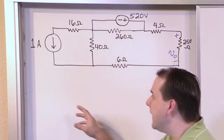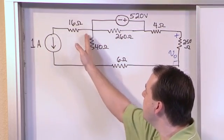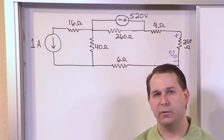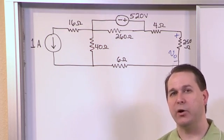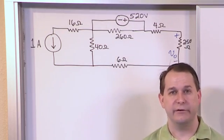What I see right away is that I have a current source here and I have a resistor in parallel with that current source. So we talked about that before when we introduced source transformations. If you have a current source in parallel with a resistor then you can rewrite it as a voltage source in series with that resistor.